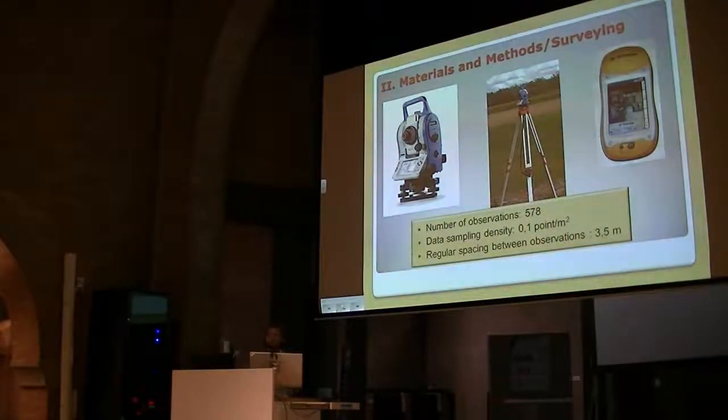Altogether, 578 points were surveyed in such a way to represent the smallest distances in the terrain relief as well. As you can see on the slide, the data sampling density was 0.1 point per square meter and the regular spacing between the observations was 3.5 meters.